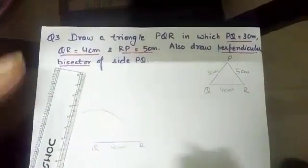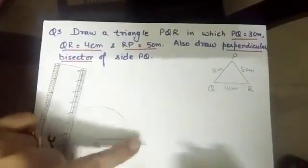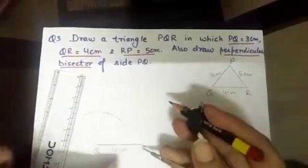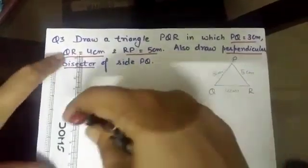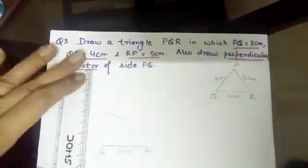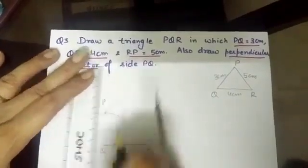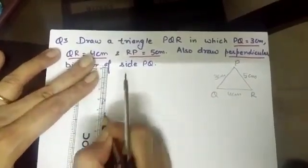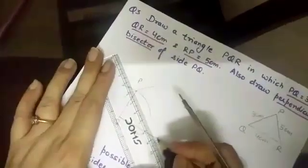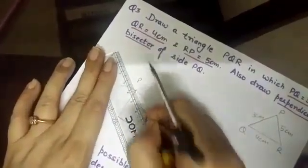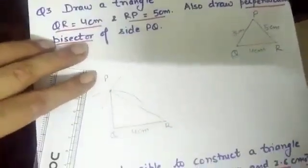Now, this side PR is 5 cm. Open your compass, that is 5 cm. PR is given. The point P is here. So we will take R as a center and draw the arc which cut the previous arc at a point. That point is P. Join PQ and QR. What type of triangle you have seen there? Here. It is a right angle triangle.